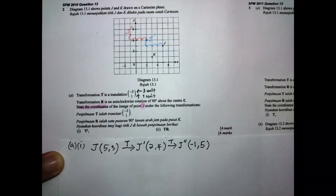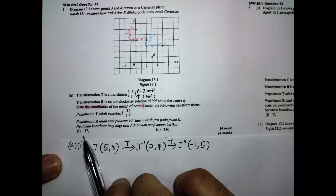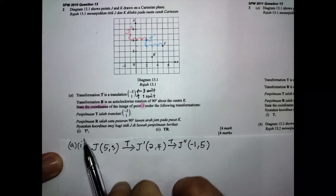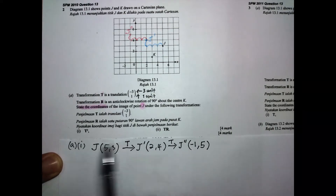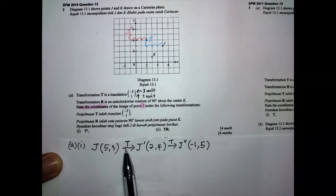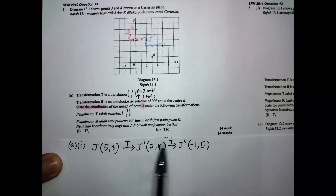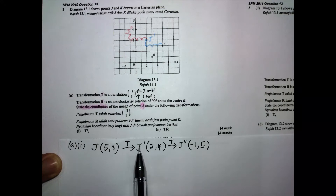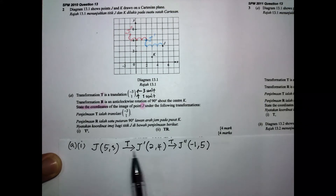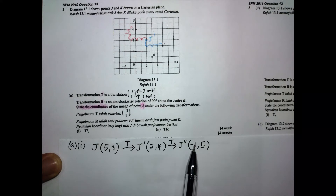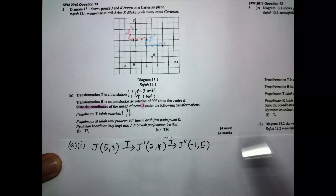This is the answer for part A number one. T squared means we perform transformation T two times. We go from the object to the first image, then from the first image to the second image. That completes part A, number one.